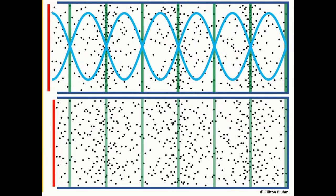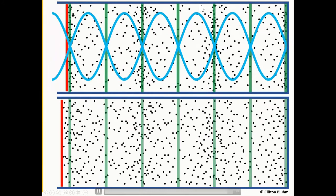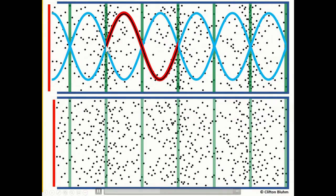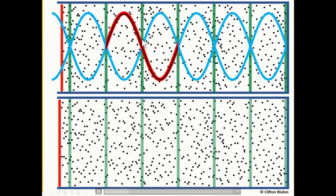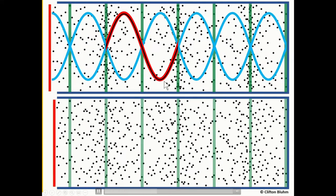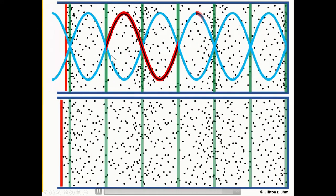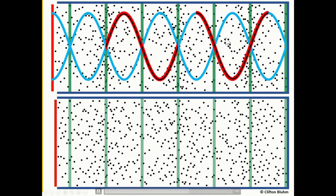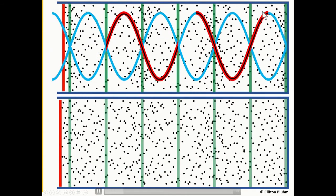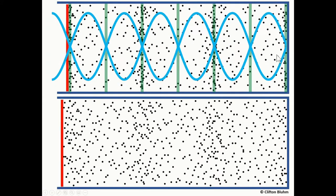It is much easier to draw transverse waves with crests and troughs than these animations. If I draw starting at a node, going through a node, and ending at the next node, that's one complete wavelength. From one node to the next node is only half of a wavelength. Or drawn from anti-node to anti-node is also a whole wavelength — just like going from crest to trough to crest again.